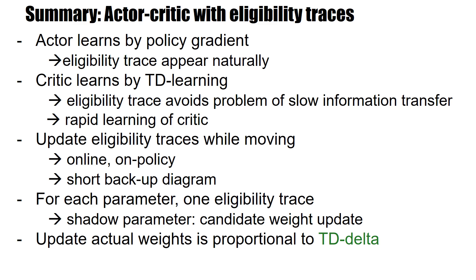To summarize: in the actor-critic with eligibility traces, the actor learns with policy gradient, and as I've shown, eligibility traces appear naturally in such a setting. The critic learns by TD learning, and having an eligibility trace in the critic avoids the problem of slow information transfer seen in standard TD algorithms, therefore giving rapid learning of the critic. This makes V-value estimates available for use in the TD update. The eligibility traces are always updated while moving, so updates are completely online and completely on-policy.